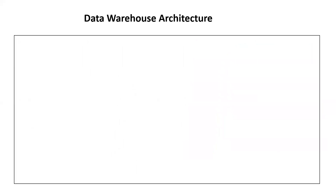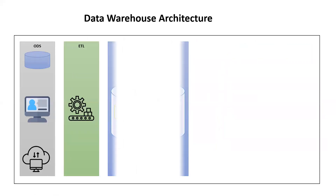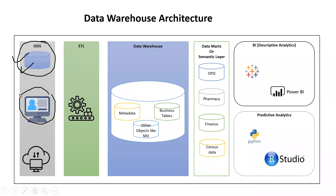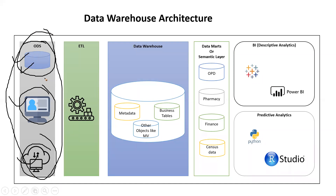Now let's talk about the architecture — how data actually flows in real-time. We'll cover where the database fits, where ETL processes come in, where reporting happens, and where predictive analytics fits. In the architecture, you start with the ODS (Operational Data Source). You can have multiple ODS sources: customer data, website data, app data.